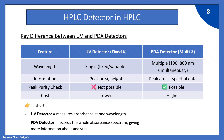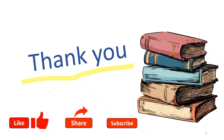In short, the UV detector measures absorption at one wavelength, while the PDA detector records the whole absorbance spectrum, giving more information about the analytes. Thank you — I hope you liked the video. If you found it helpful, please like, share, and subscribe to my channel, and show your support in the comment section. Bye.